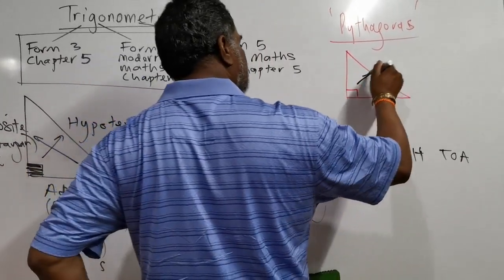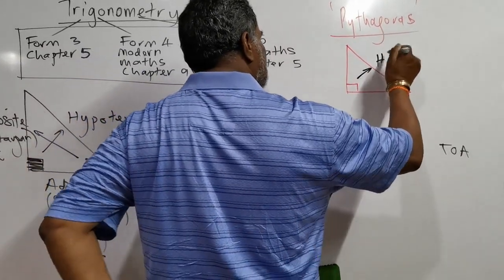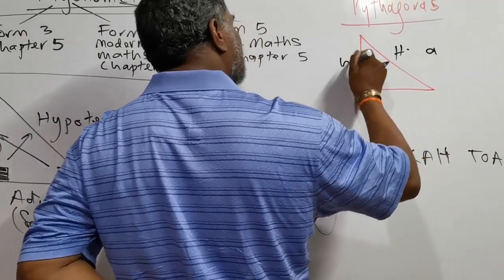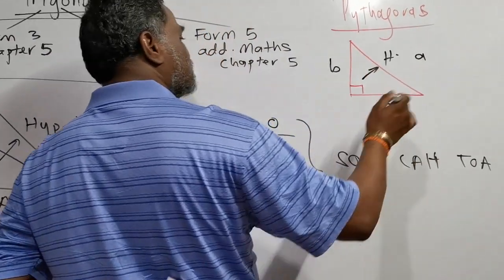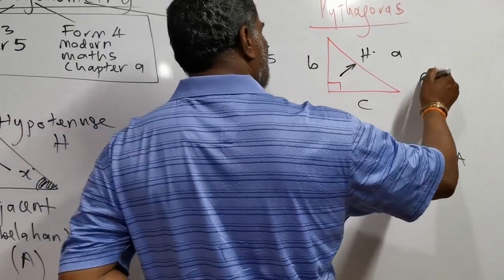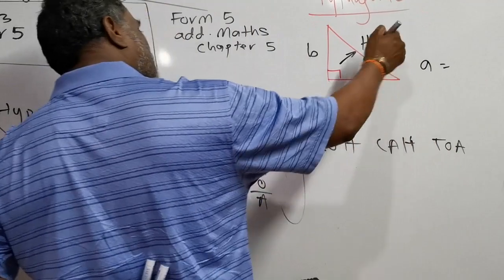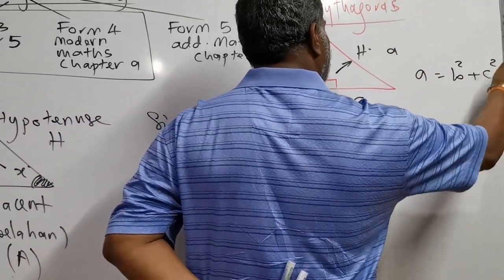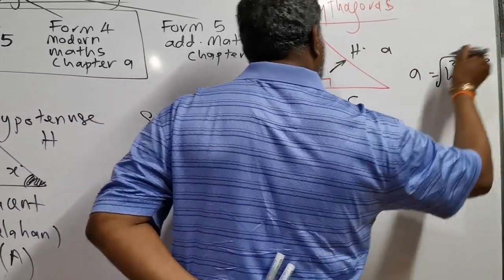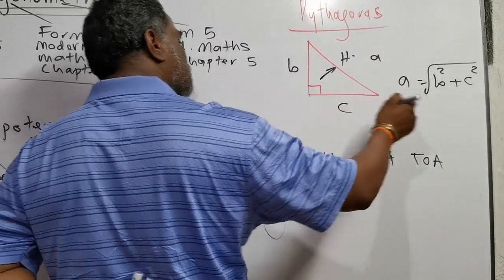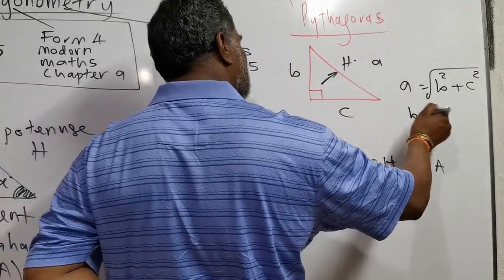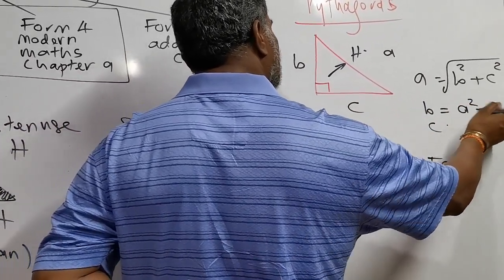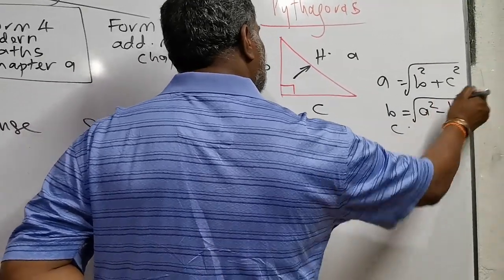Pythagoras theorem: the side opposite 90 degrees is the hypotenuse, which is the longest side. To find the hypotenuse, the formula is: hypotenuse = √(b² + c²). If you want to find one of the other two sides, you need to subtract: for example, b = √(a² - c²) or c = √(a² - b²). Only for hypotenuse do you add; for the other two sides, you subtract.